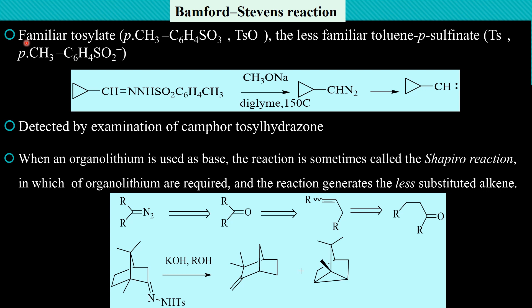The carbene nature of this intermediate was detected by examination of camphor tosylhydrazone, which on heating with hydroxide gives a mixture of camphene and tricyclene. When an organolithium is used as a base, the alkene-forming reaction is sometimes called the Shapiro reaction, in which organolithium reagents are required and the reaction generates a less substituted alkene (which is less stable). Remember that usually the more substituted, more stable alkene is generated.